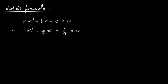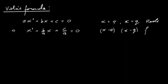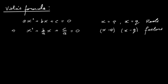Now let's say the roots of this equation are x equal to p and x equal to q. By the factor theorem, x minus p and x minus q would be factors. If we multiply these two factors together we should get our equation, so let's do that.